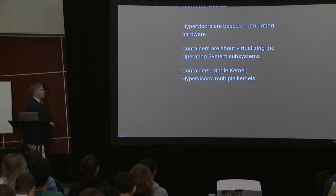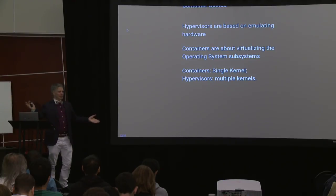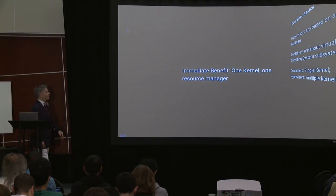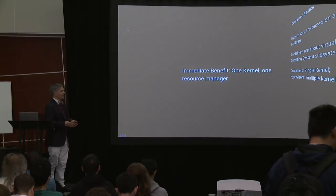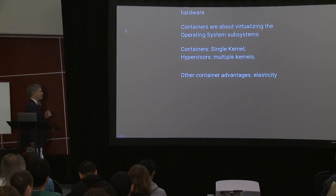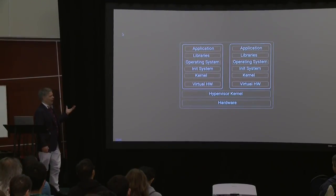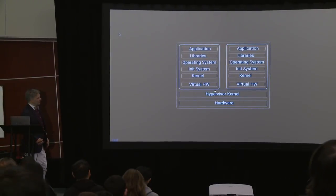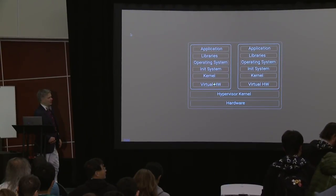The main difference between hypervisors and containers is containers are a single kernel; hypervisors are multiple kernels — for every hypervisor system you have a host kernel and a guest kernel. The immediate benefit to containers, which is why the technology is so beloved by the cloud where everything wants to run lean, is that if you have one kernel you have one resource manager. This gives us huge advantages like elasticity. Here's your hypervisor kernel running in the host — you emulate one virtual hardware set for guests and the guest brings up its own kernel and runs an incredibly large stack on top.